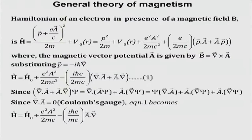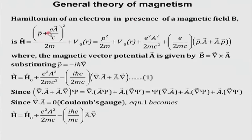In the quantum mechanical formalism, the Hamiltonian is the first thing to be written. The usual Hamiltonian is the kinetic energy part, which is p²/2m, plus the potential energy V₀. For example, for a hydrogen atom, V₀ involves Z=1. When there is a magnetic field B applied, the effect of the magnetic field modifies the momentum: the momentum becomes p + eA/c in CGS units, where A is the vector potential related to B by B = ∇ × A.